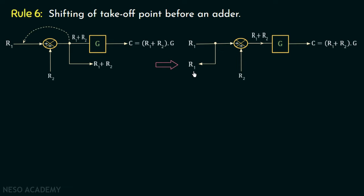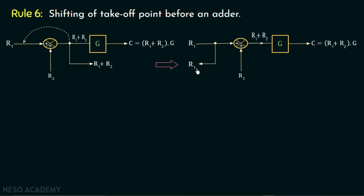Now it is r1. When the takeoff point was after the adder, the output was r1 plus r2, because the output of that branch was r1 plus r2. But now this branch has the signal r1, and so the output of this takeoff point is also r1. However, the output of the takeoff point must be the same before and after shifting, so it must remain r1 plus r2. In order to make this output r1 plus r2, we need to add r2.